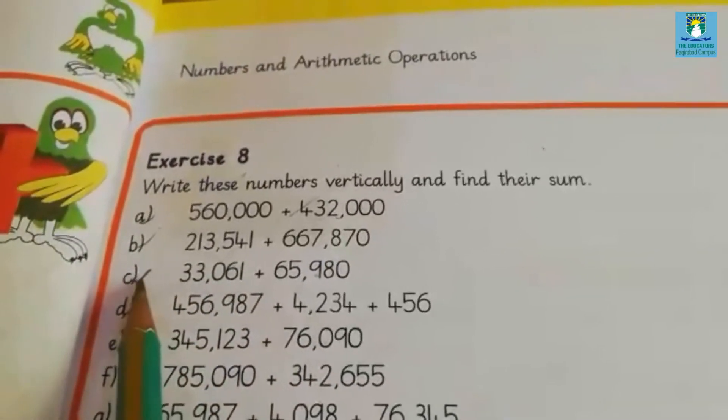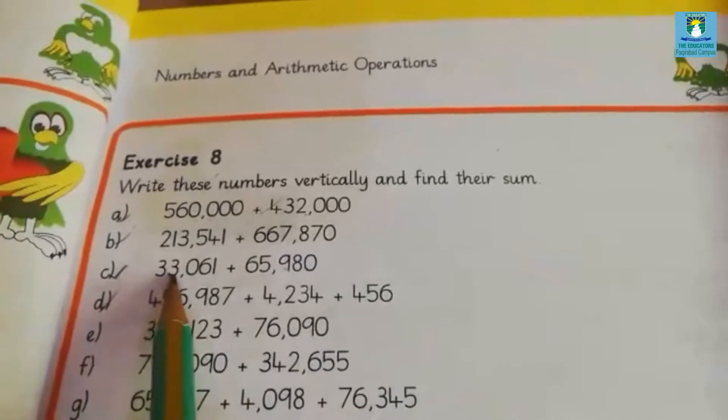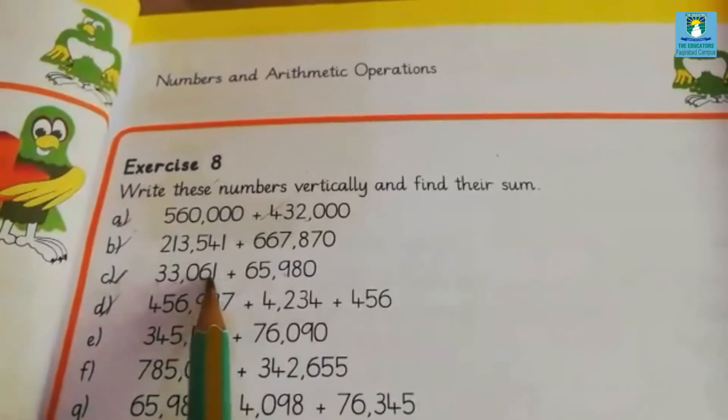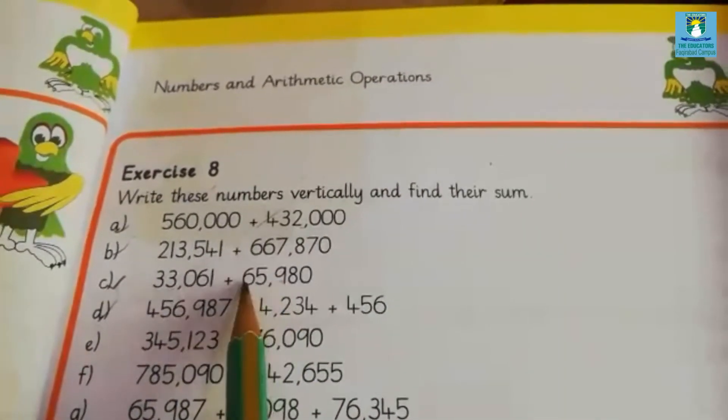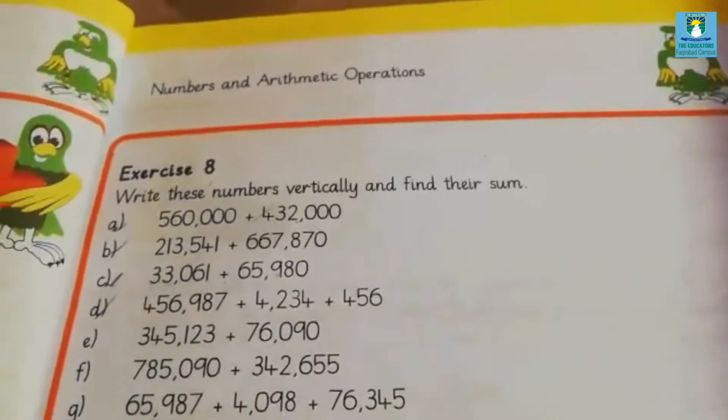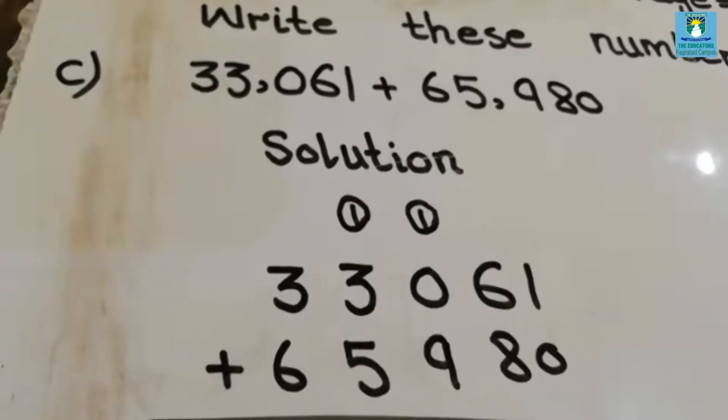The next part is part C: 33,061 plus 65,980. First we will write the values vertically.